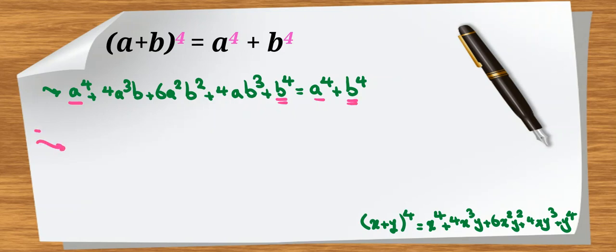So we can say that we subtract a to the 4 plus b to the 4 on both sides. So left-hand side will be 4a cubed b plus 6a squared b squared plus 4ab cubed equal to 0.